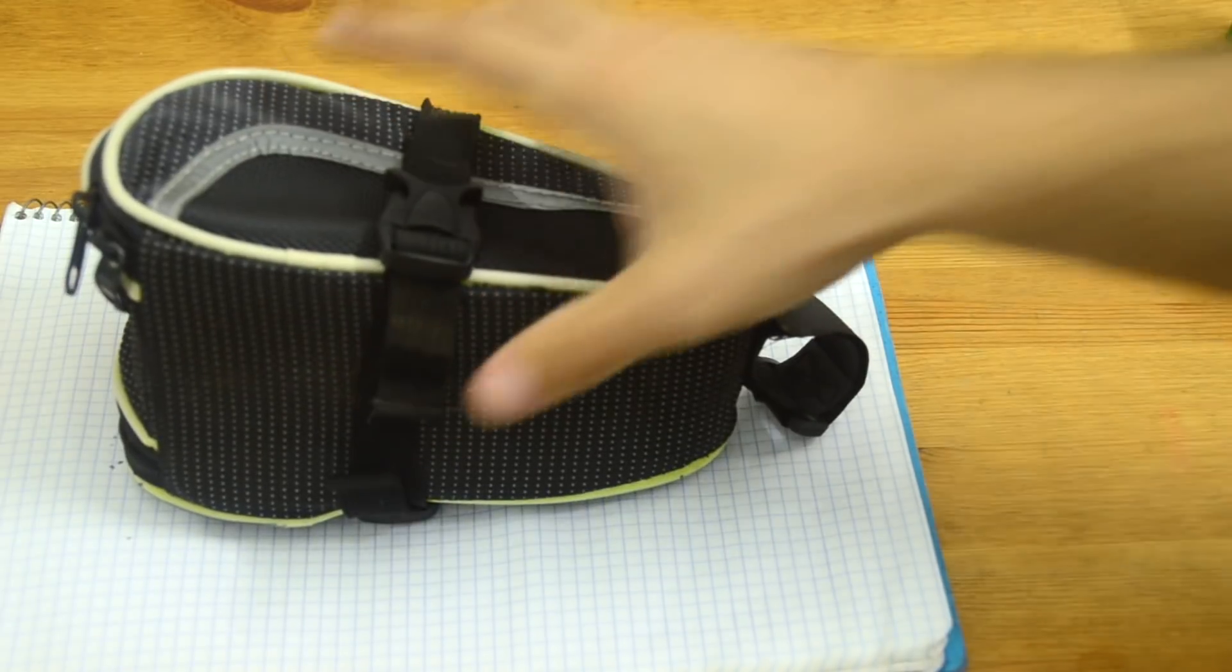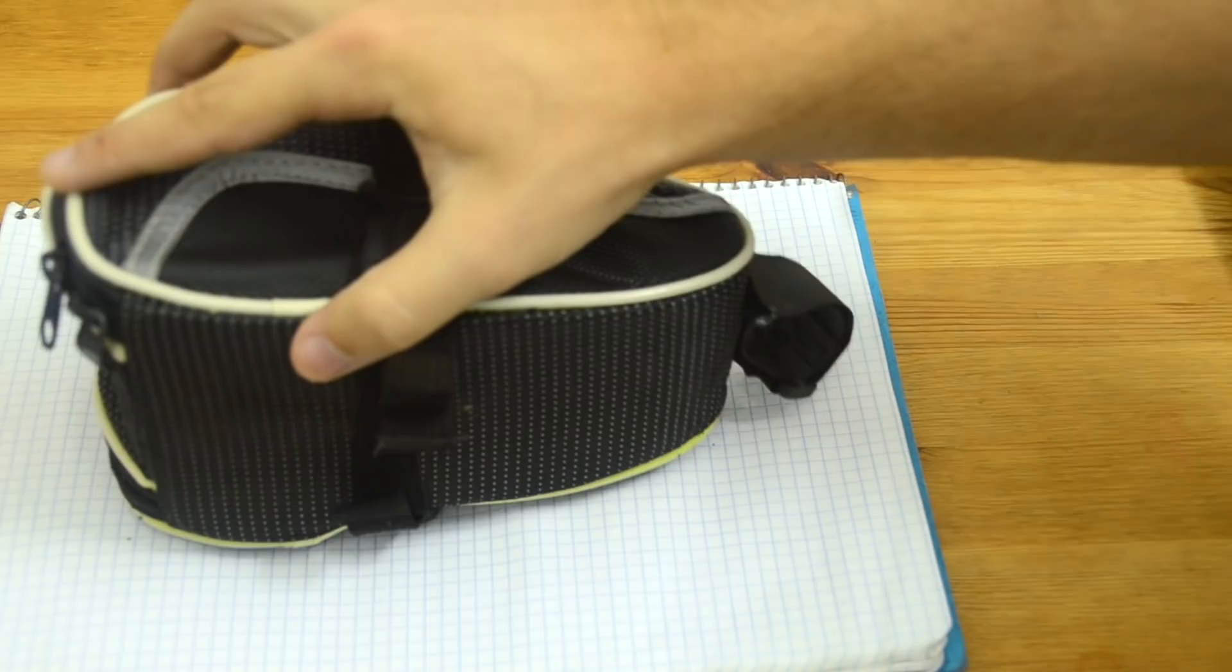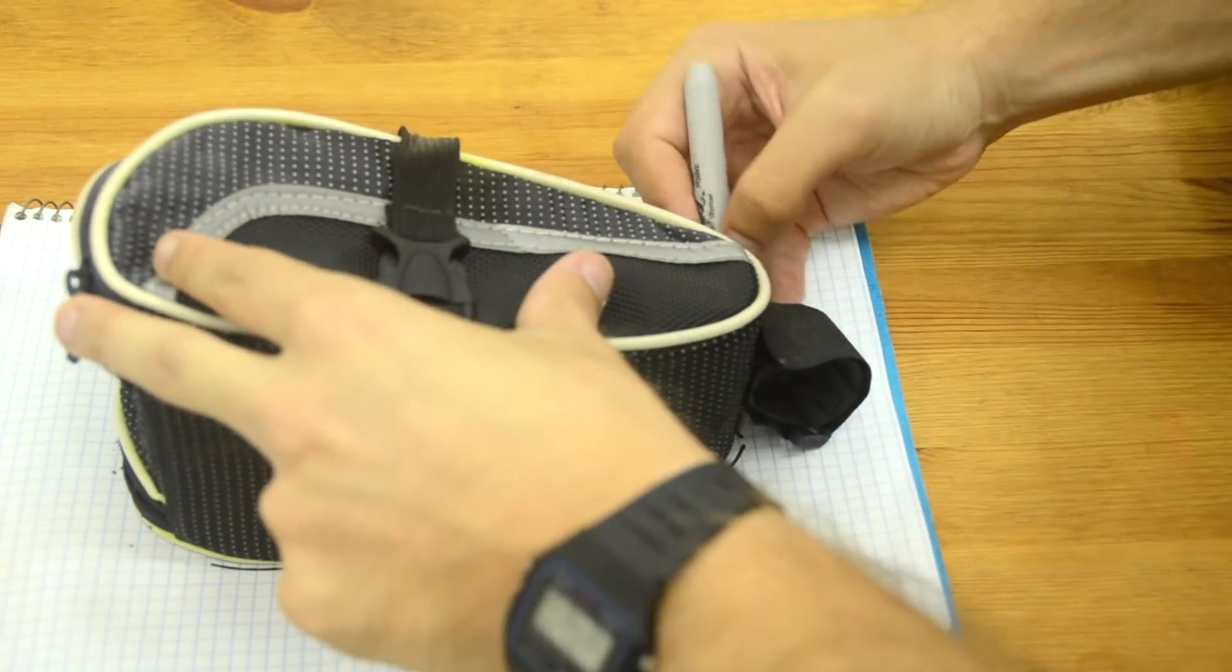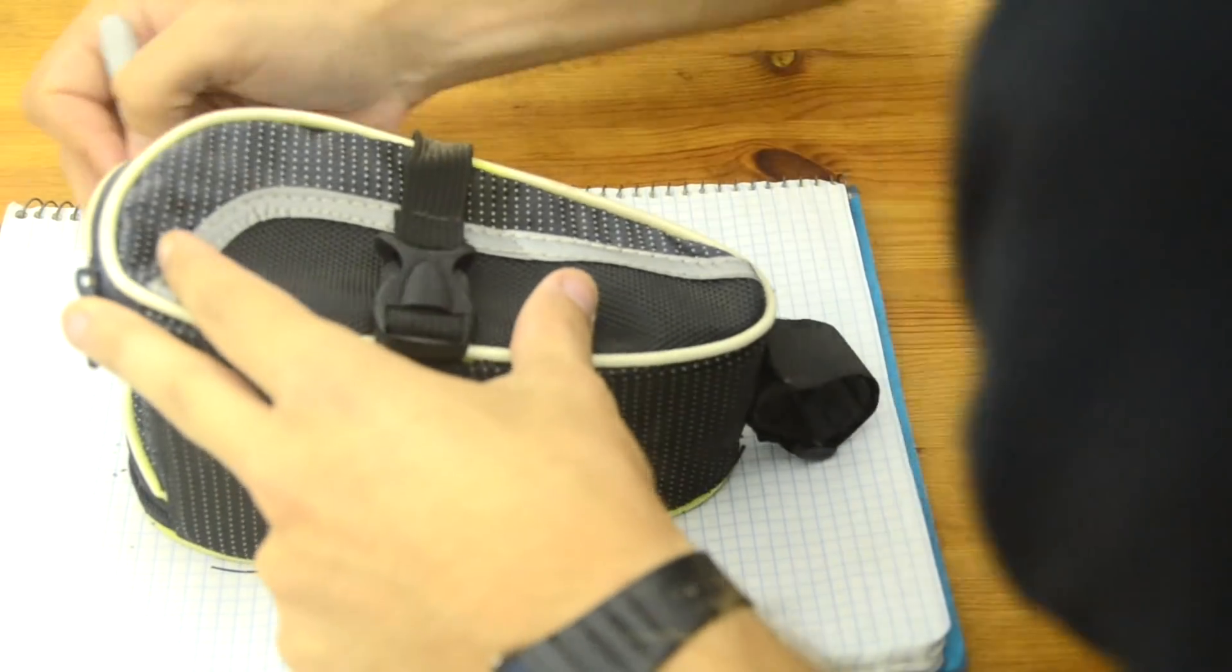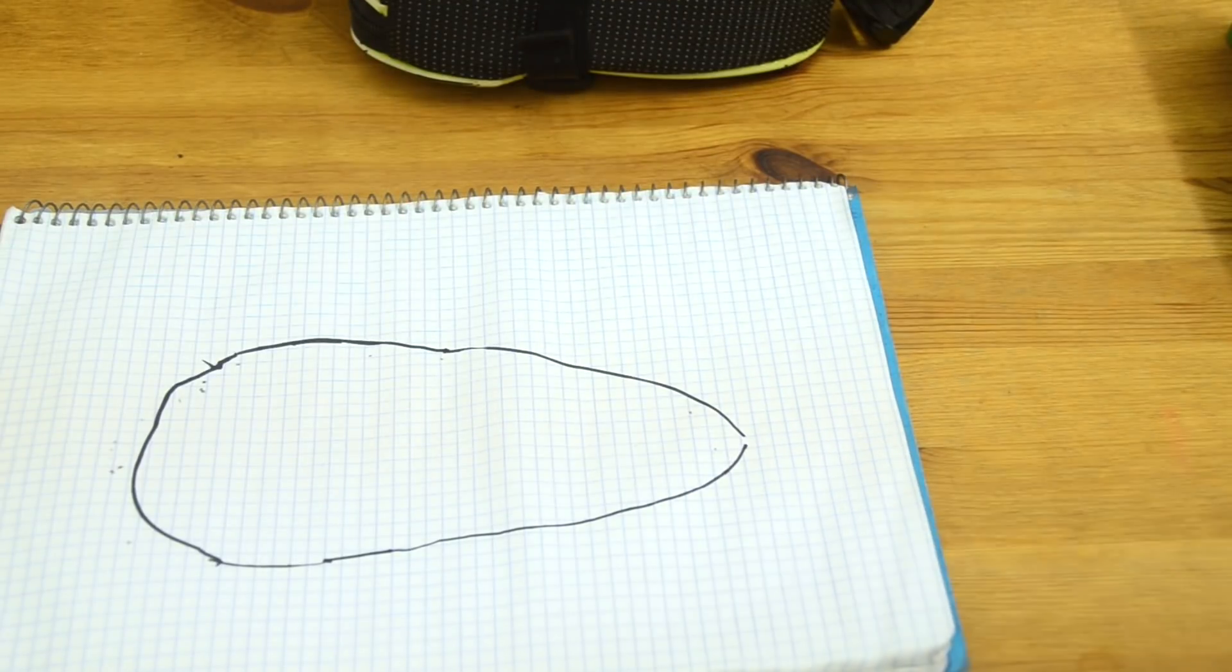I'm just going to start with a notebook here and I'm going to take my bag that I want to put this battery in and trace out the outline of this bag on the paper. Now this isn't going to be perfect, but I want to get it as close as I can. Not perfect, but pretty close.